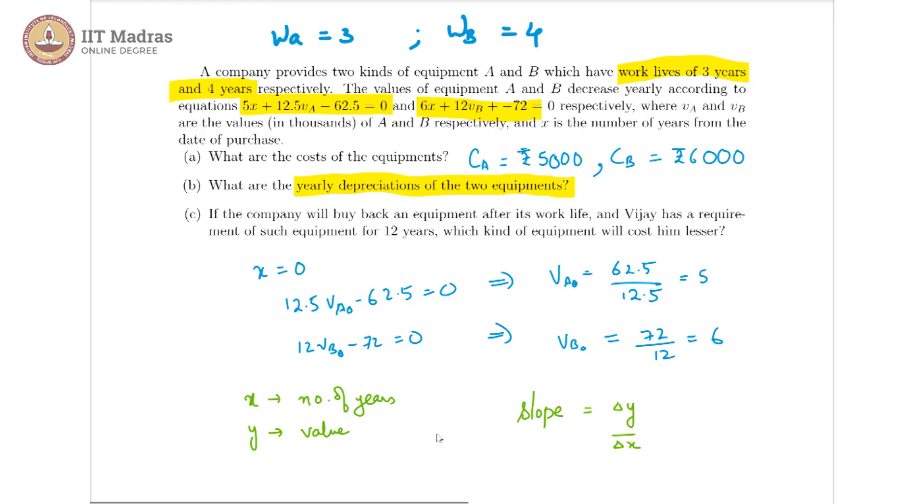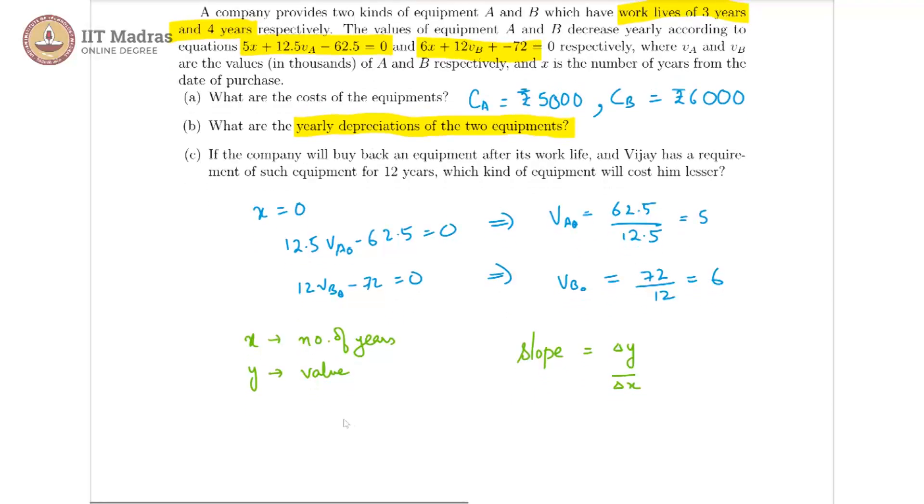Because slope is change in y, delta y, by change in x. So when delta x is equal to 1, delta y is equal to the slope. So we can find this by just finding the slope for each of those two linear equations. And for the slope we convert our equations to the y is equal to mx plus c form. Then the m is going to be the slope.